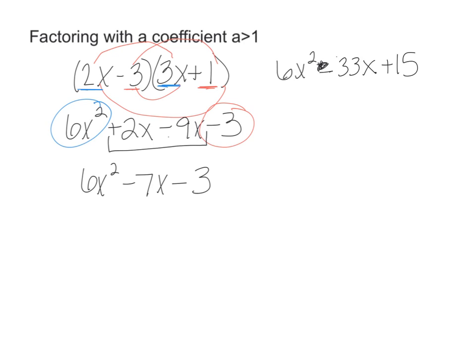So I start by what numbers I can multiply to get 6, and then I'll look at what numbers I can get to get 15, multiply to get 15. So 6x is 6 times 1, or 3 times 2. And the 15 is our 15 times 1, or 3 times 5. I'm not going to worry about the negative signs yet, I'm not going to worry about any of that, the order will play with that in a minute.